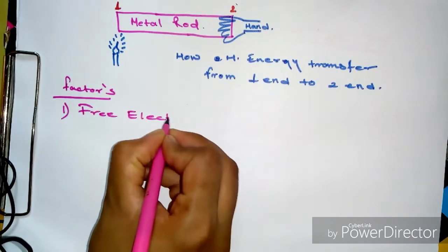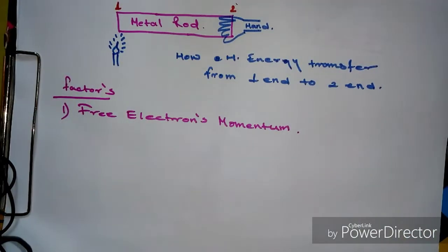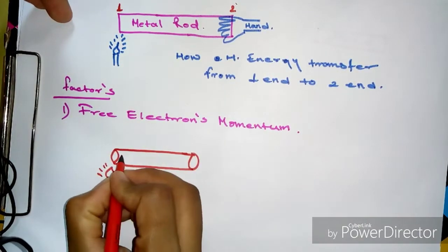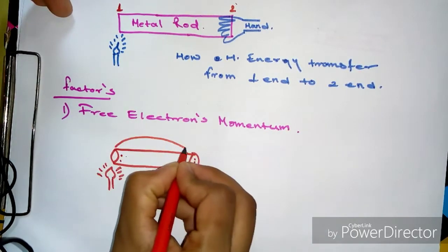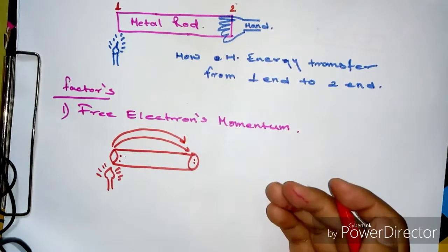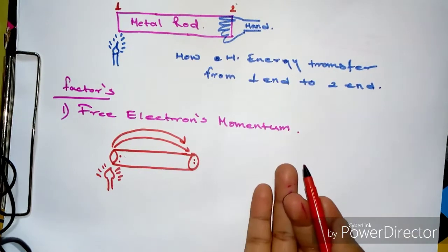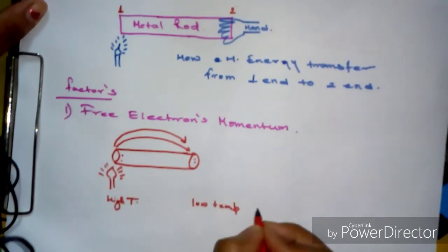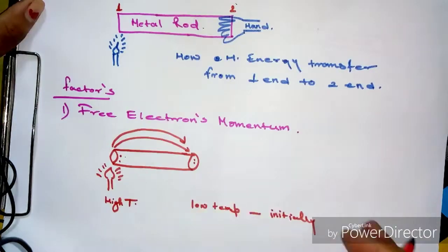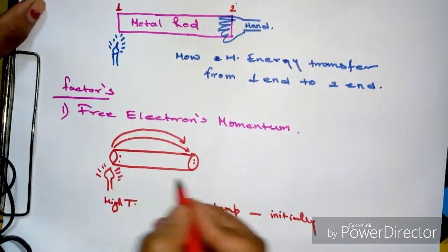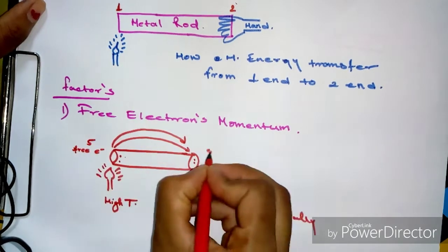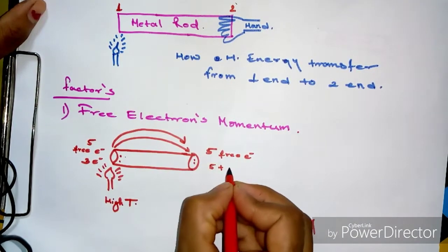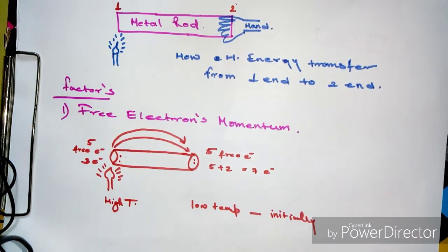The first factor is free electron momentum. When we heat one end of a metal rod, the free electrons present there increase in energy and start moving from the higher temperature end to the lower temperature end. Because of this movement, an imbalance of electrons occurs. Through this free electron momentum, energy is transferred from end one to end two, which is why we feel the same energy at both ends after some time.